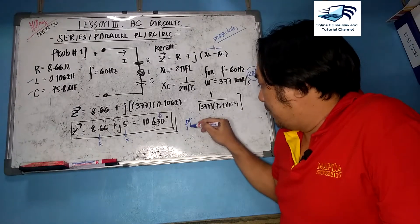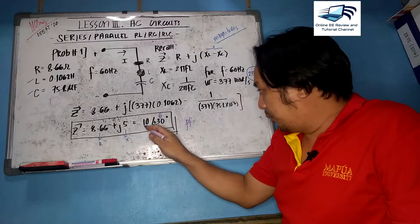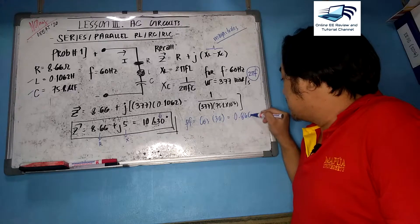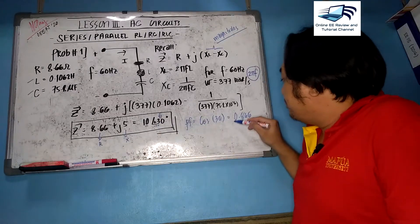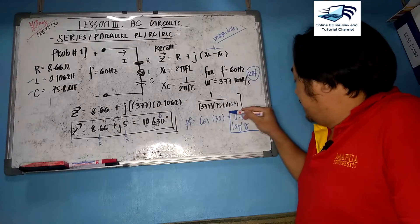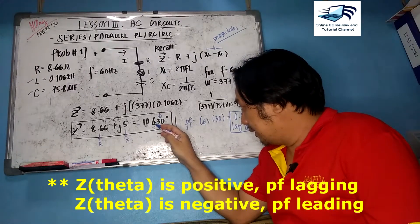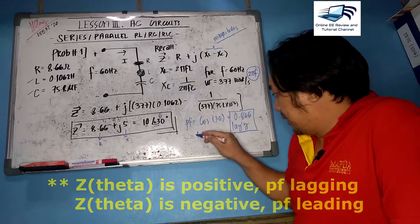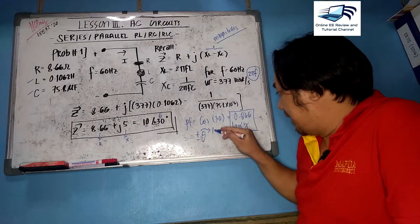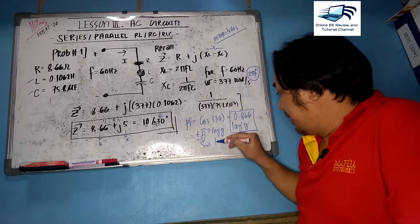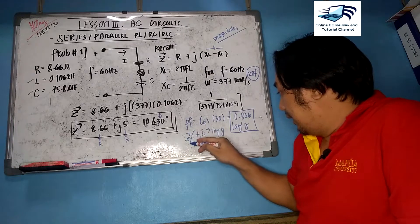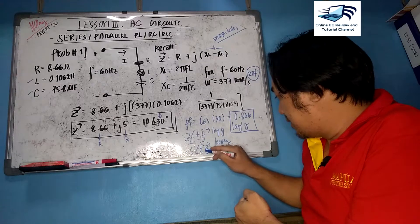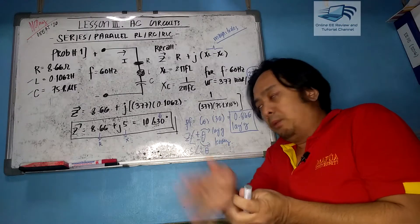The power factor can be solved from the angle of the phasor. Power factor equals cosine of 30 degrees, which gives 0.866. Since the angle is positive, this is a lagging condition. Note: a positive angle means lagging and a negative angle means leading — this applies for impedance Z and similarly for complex power S.